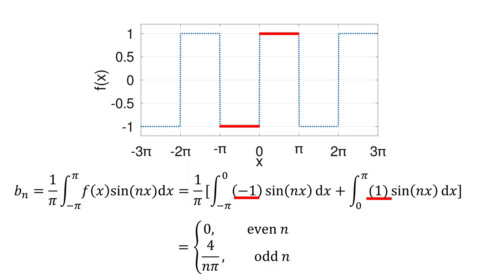For even n, bn equals 0. And only for odd n, it will give you 4 over n pi. So we'll use an equal to 0 and bn equal to 4 over n pi, odd n only for plotting. Then we can compare with the square wave function.